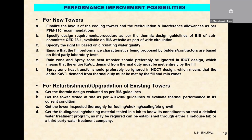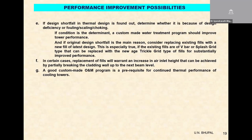These are basically the measures one can look at when specifying a new cooling tower and looking for improvement in an existing one. These are the points in a nutshell. In a case where the design shortfall in thermal design is found, determine whether it is because of design deficiency or fouling — there is always a combination. In most cases, both design deficiency and fouling play a part if it is an existing cooling tower.